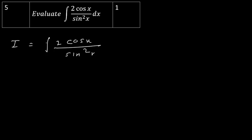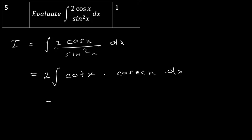For the next problem, either substitute sin(x) = t, or use the formula: cos(x)/sin(x) = cot(x) and 1/sin(x) = cosec(x). The integration of cosec(x)·cot(x) is -cosec(x) + c. So that is the value of I.